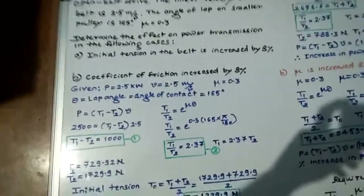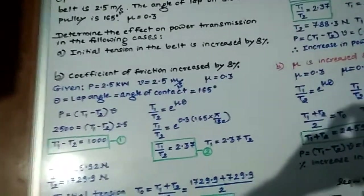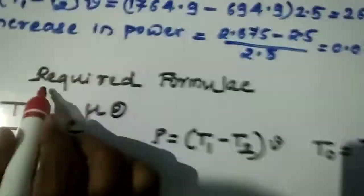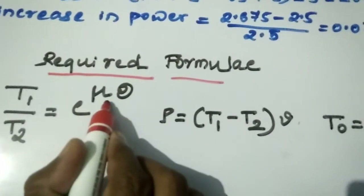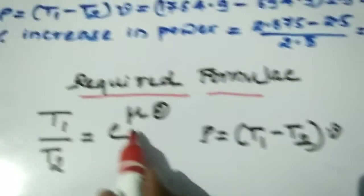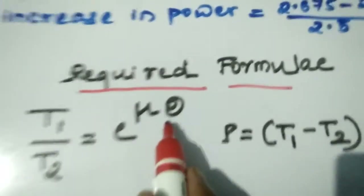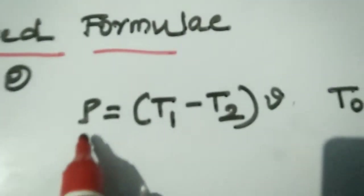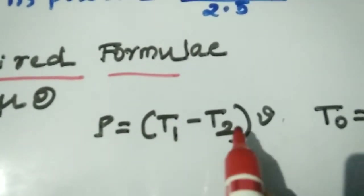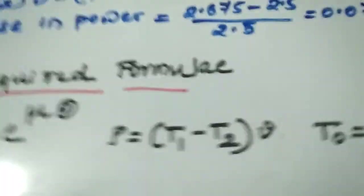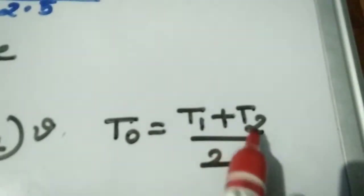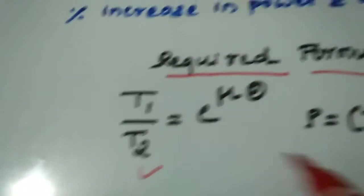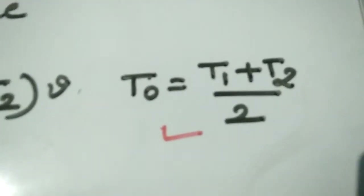Today I will solve this example. Before going to this example, you need some formulas. The first equation is T1 by T2 equal to e raised to mu theta. Mu is the coefficient of friction and theta is the lap angle or angle of contact. You also need the power formula: P equal to T1 minus T2 into velocity. One more formula is initial tension: T0 equal to T1 plus T2 divided by 2. You need these three formulas to solve this example.